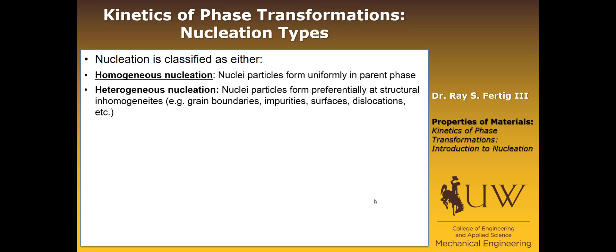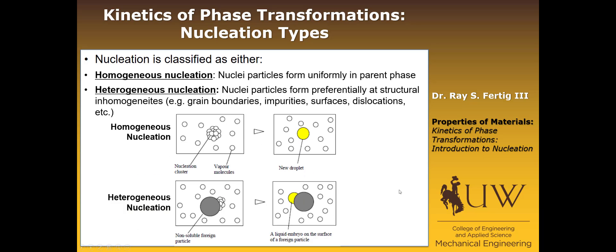We've already discussed this a bit in the eutectoid transformation and microstructures for steel, where we said probably we're going to nucleate new phases at the grain boundaries — that would be a good example of heterogeneous nucleation. Or they could nucleate at other impurities, particulates, surfaces, dislocations — anything that causes a location of higher energy. In homogeneous nucleation, a cluster of atoms forms in a random fashion and then acts as its own nuclei that can grow. In heterogeneous nucleation, some foreign particle or particulate is present, and the new phase grows on its surface to form the nucleus from which growth will occur. Those are the two types: homogeneous nucleation and heterogeneous nucleation.